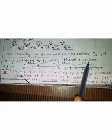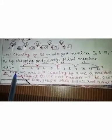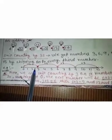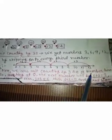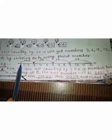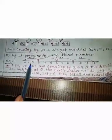We get numbers 3, 6, 9, 12, 15 by skipping on to every third number. Let us see. Here we are skip counting by 3 on a number line. So starting at 0, the next number will be 0 plus 3, that is 3.